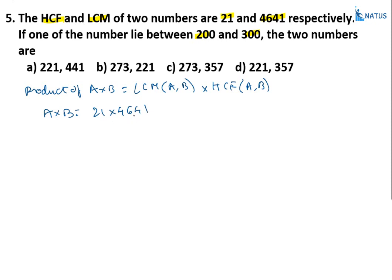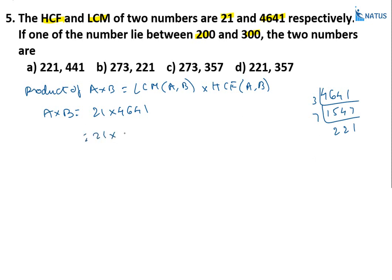Convert 4641 into prime factors by dividing: 4641 ÷ 3 = 1547; further division gives factors. The number 221 lies between 200 and 300, so initially we try 21 × 221.